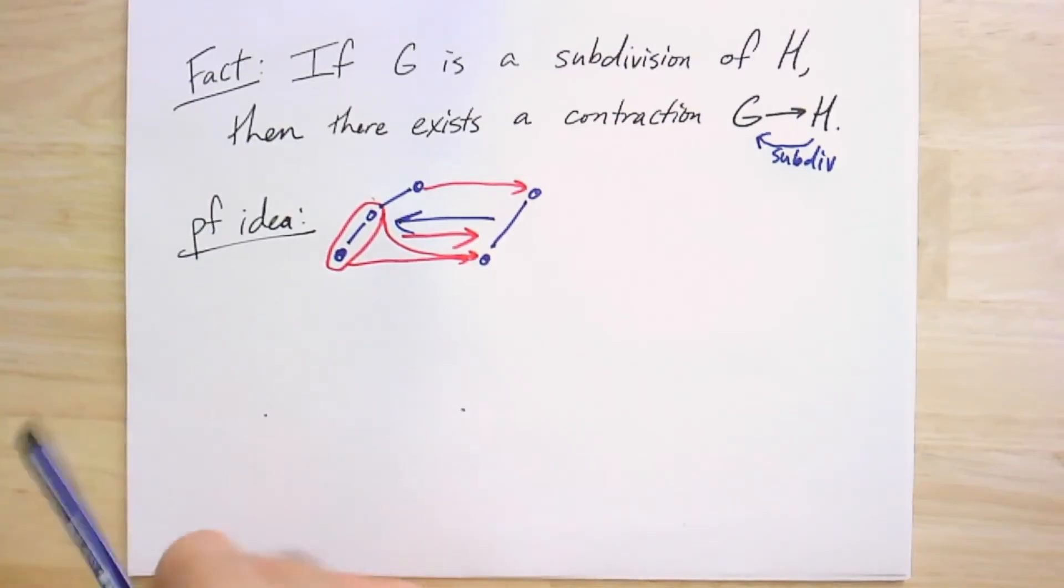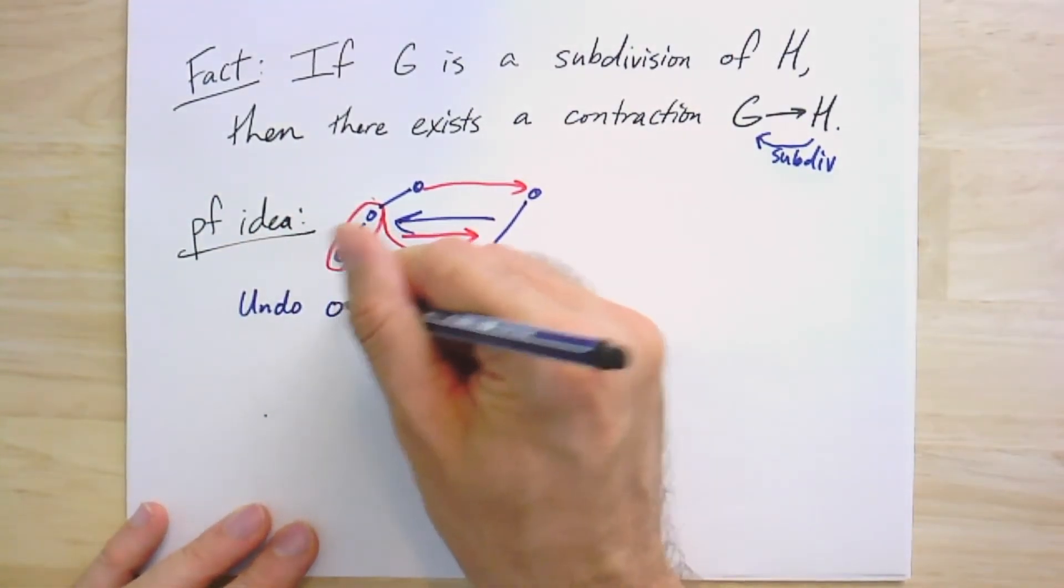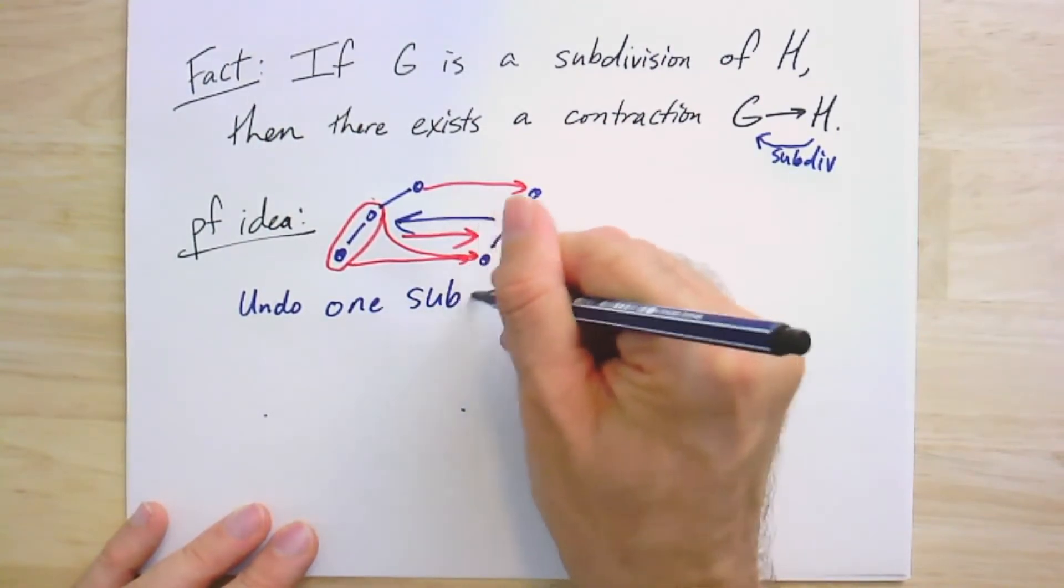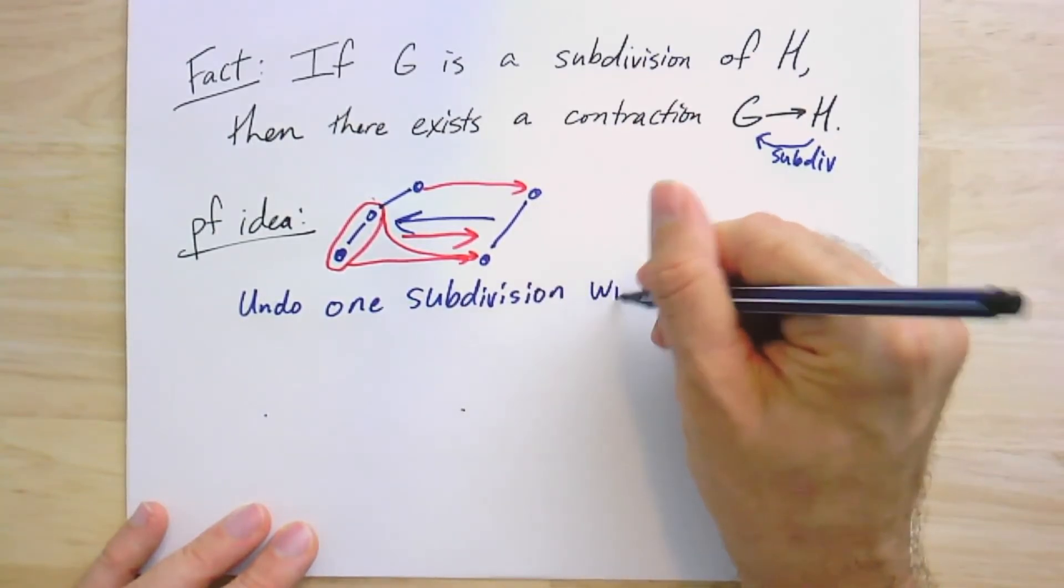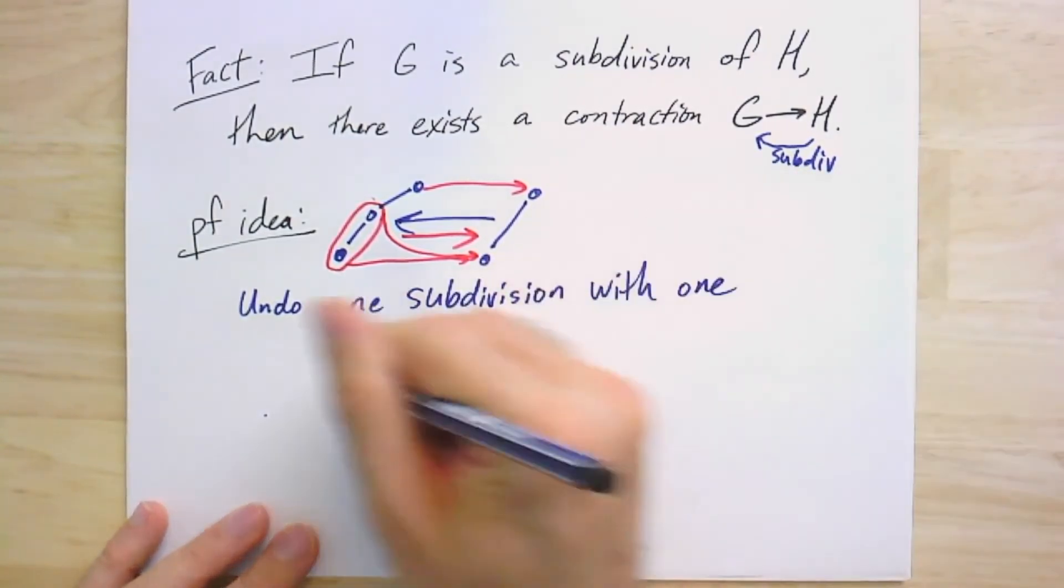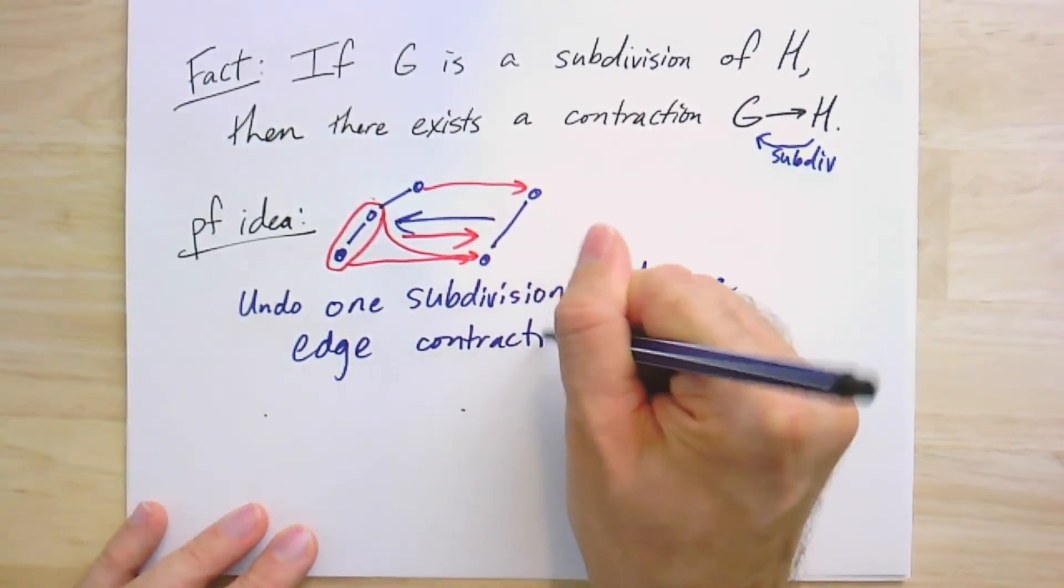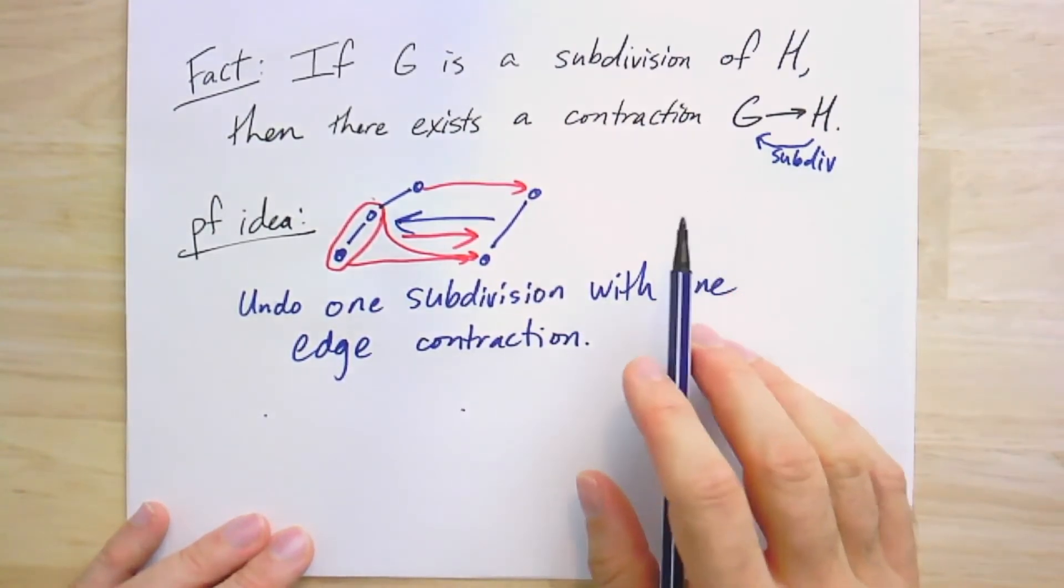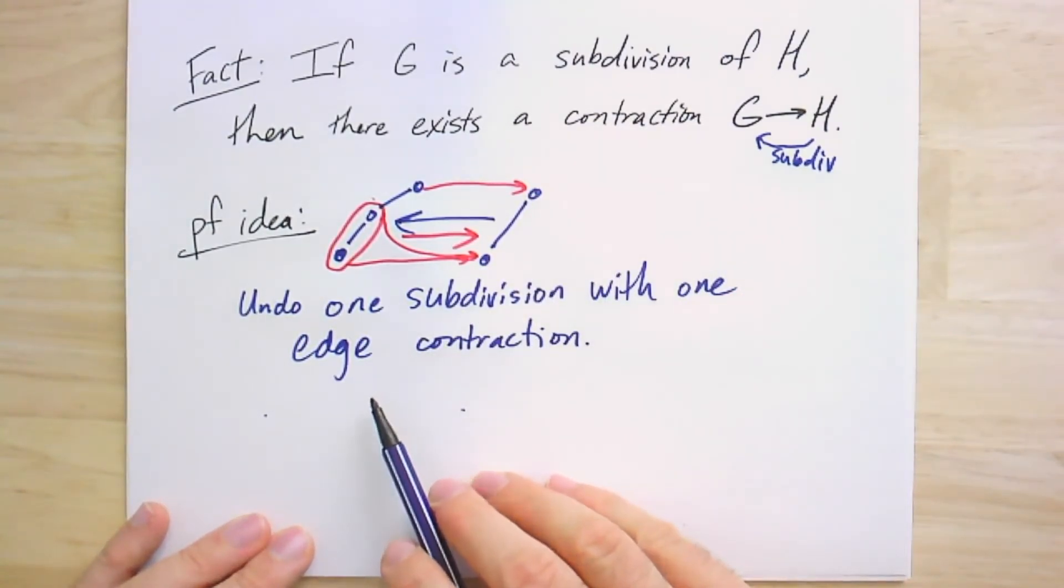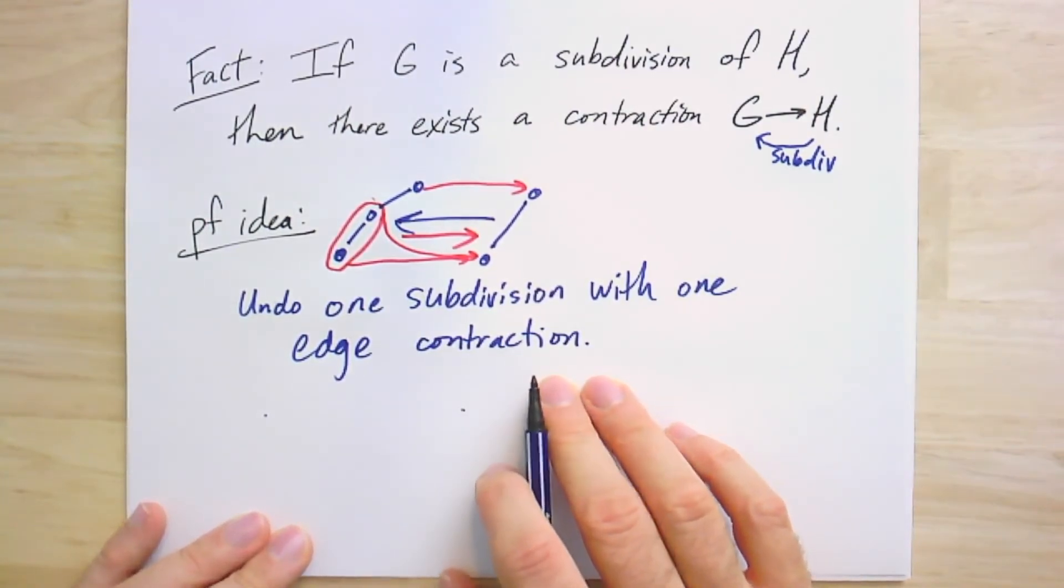So I'll give you at least the sketch is that you can undo one subdivision with one edge contraction. So if you were to form G by a sequence of subdivisions, you would get a sequence of contractions that you could apply in the opposite order.